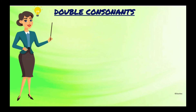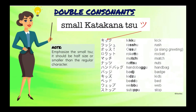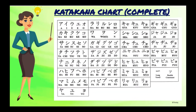We also have double consonants in katakana. Double consonants — or a pause in speech — such as double k, tt, pp, and ss are represented by a small or half-sized katakana tsu, as shown in the examples. Make sure to memorize them all so that you will know how to read and write some Japanese words that use katakana.